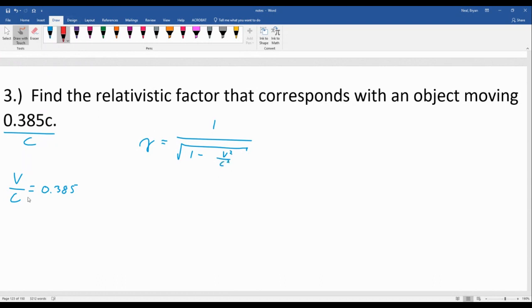And then what we can do, because we already know V over C, we can sort of factor in and bring the squared part up together. And we essentially just plug in that decimal. So gamma is now 1 over the square root of 1 minus 0.385 squared.